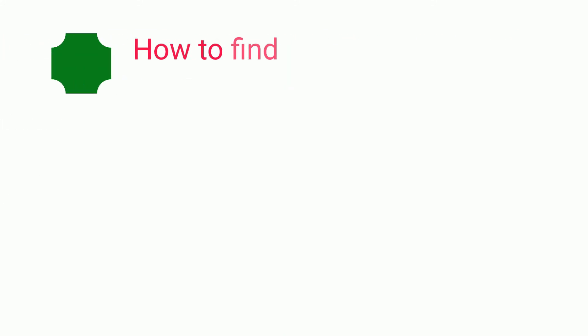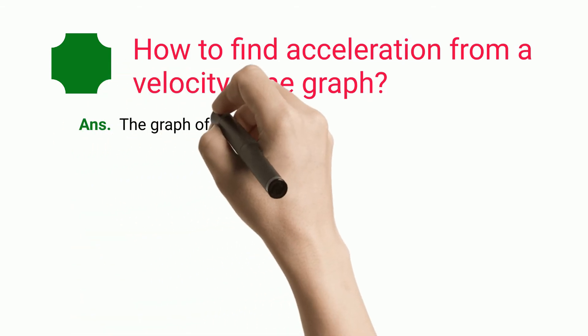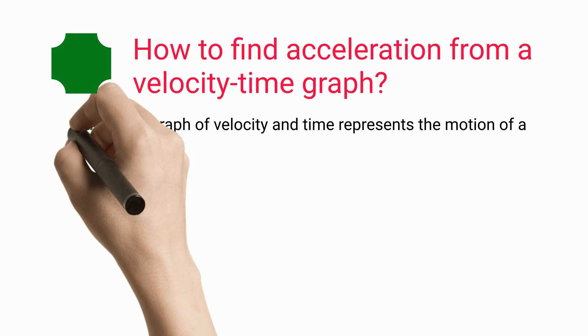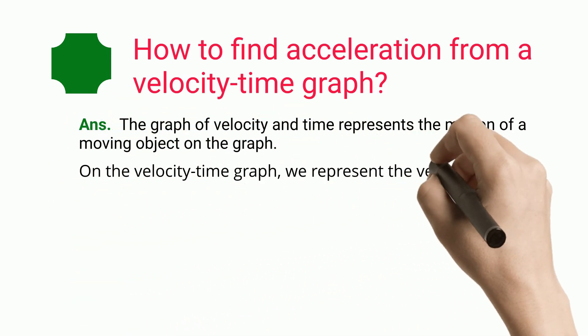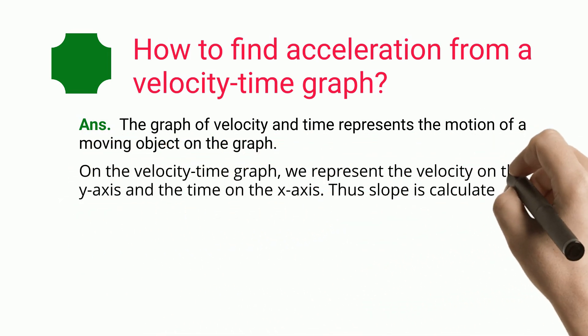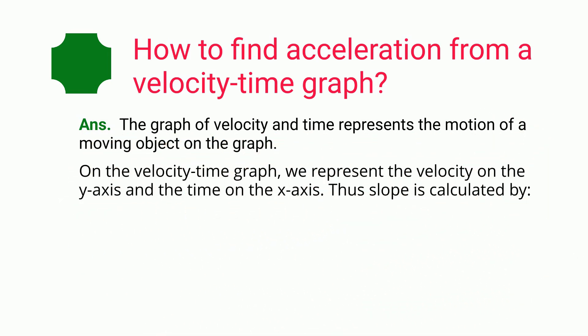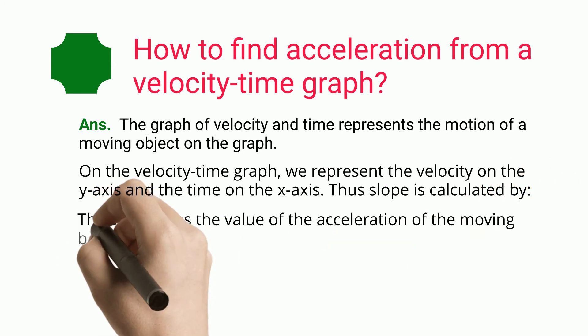How to find acceleration from a velocity-time graph? The graph of velocity and time represents the motion of a moving object. On the velocity-time graph, velocity is represented on the y-axis and time on the x-axis. The slope of the graph gives the value of the acceleration of the moving body.